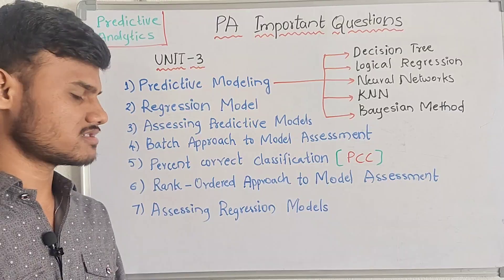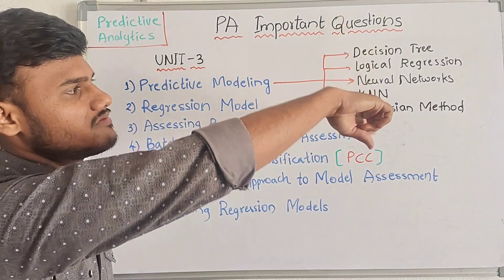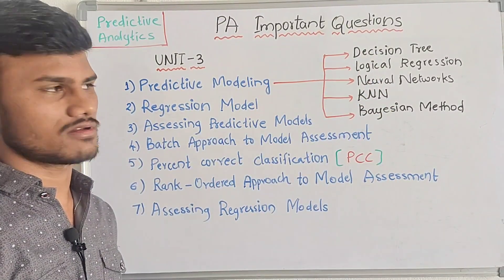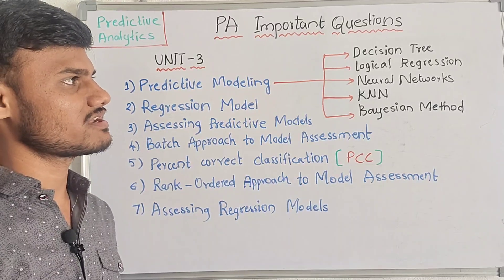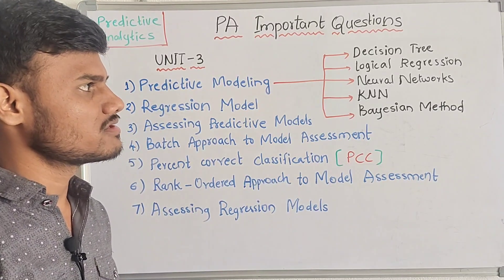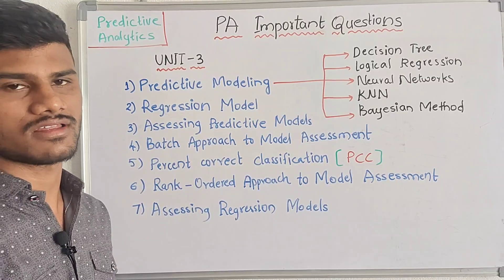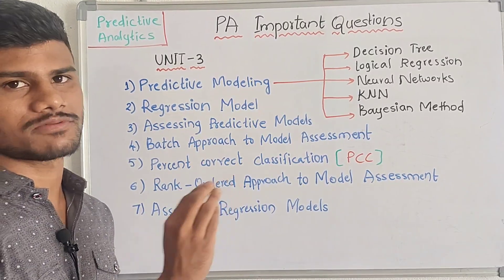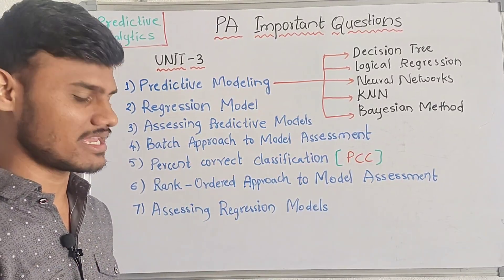The first part is Predictive Modeling. We have five types of approaches: Decision Tree, Logistic Regression, Neural Networks, KNN, and Bayesian's Method. If you have these five topics perfect, then 10 marks is easier — directly.